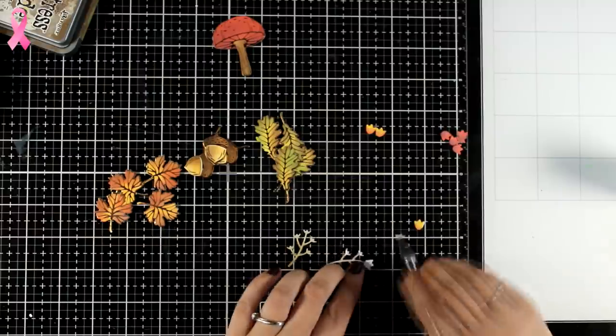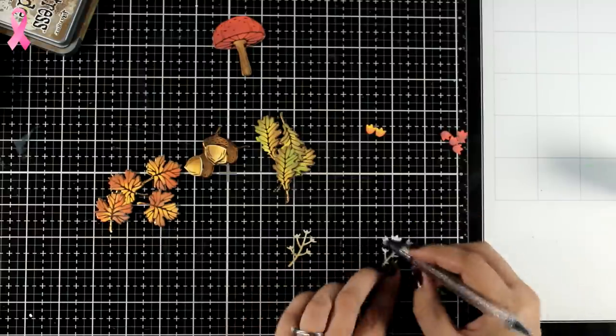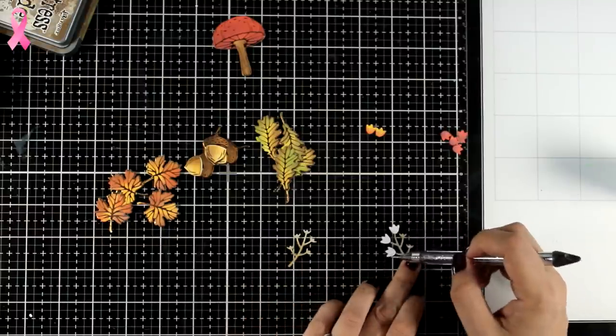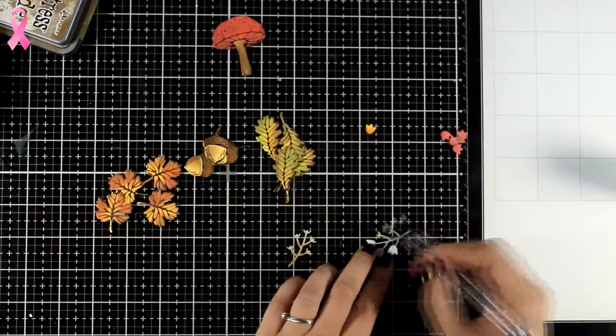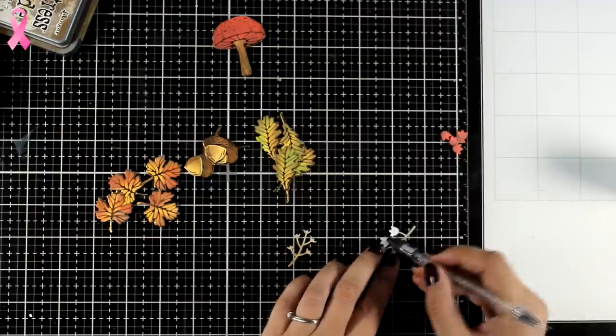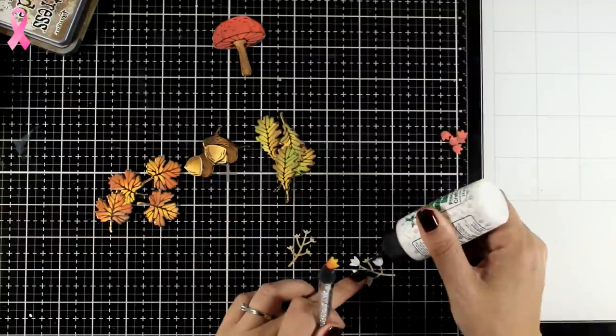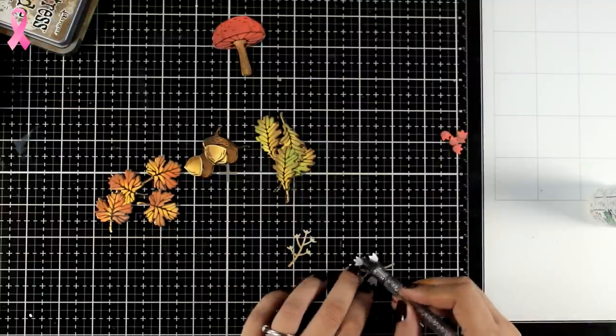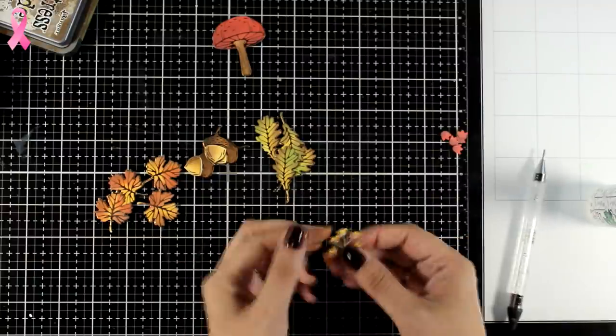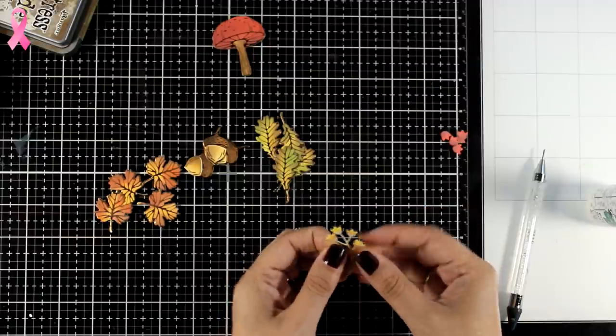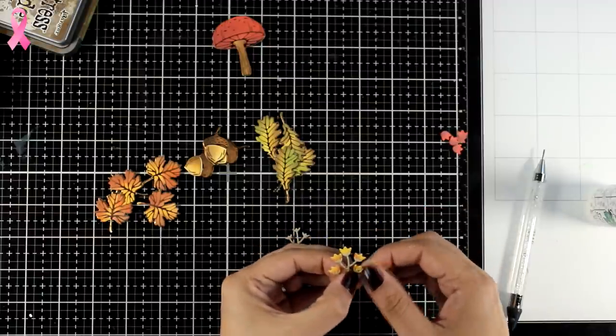In the set you will also find dies to cut out those little branches that come with a lot of tiny little flowers. I'm putting them together at the back just because I think that was easier. One of those branches have yellowish flowers, the other one will end up with red ones.